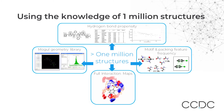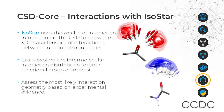The million structures that are included within the database are used for deriving knowledge. From over a million structures, we can generate a huge range of statistics on the geometry and interaction preferences for these structures. IsoStar uses a data library of intermolecular geometry or interaction preferences, using the wealth of interaction information in the CSD to show the 3D characteristics of an interaction between functional group pairs, as shown in the figures to the right. It will help in assessing the most likely interaction geometry based on experimental data within the database.